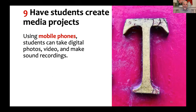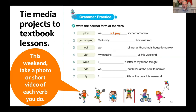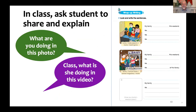Number nine: have students create media projects. Using mobile phones, they can take digital photos, video, and make sound recordings. Tie those media projects to textbook lessons though. Here's a great example of a grammar practice activity — 'this weekend, take a photo or a short video of each verb you do.' Maybe the students aren't going camping, but they may play soccer, run, skip rope, or do something else matching the words listed. It makes them think about the lesson and what they're doing over the weekend. In class, ask students to share and explain: 'what are you doing in this photo?' — it creates a real learning opportunity and complements what's in the textbook.